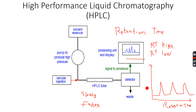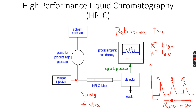On the graph we have solute A, followed by solute B, followed by solute C at increasing retention times. This tells us that A is the most polar because it dissolved more in the mobile phase and took the least time to reach the detector. C is the most non-polar because it has the highest retention time, meaning it was most soluble in the stationary phase and traveled the slowest.